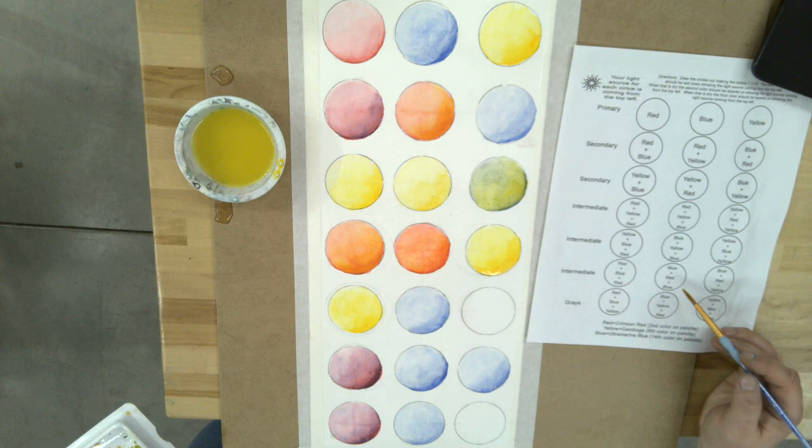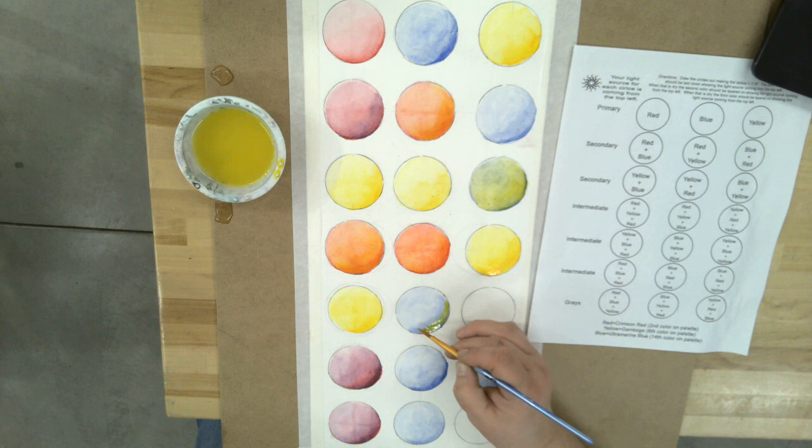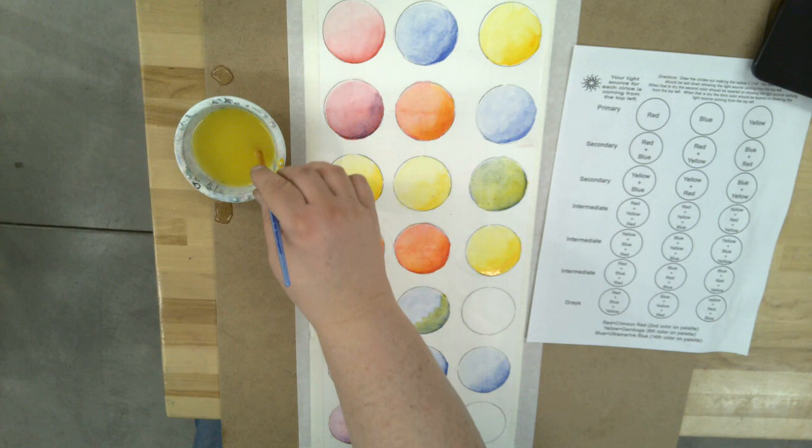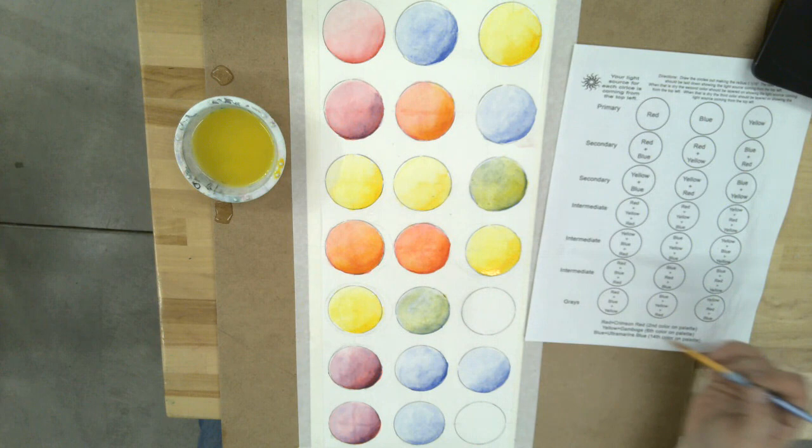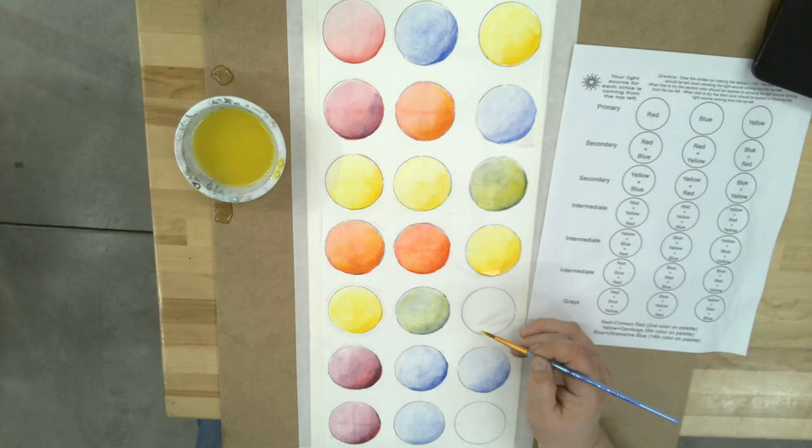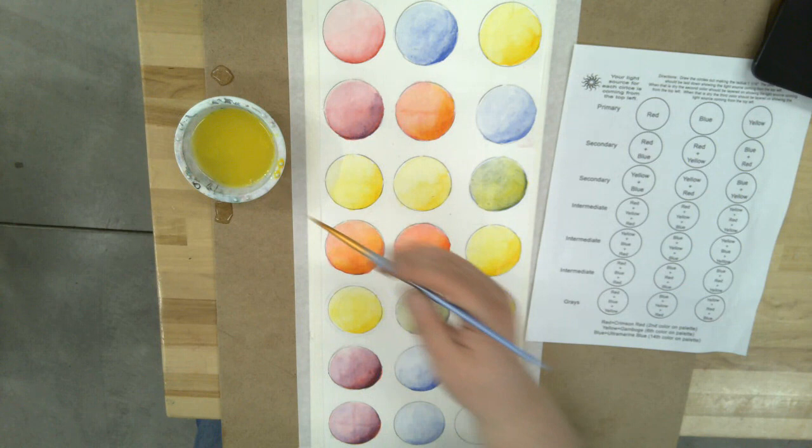This next one is blue plus yellow and then we're gonna add blue over the top, so we're gonna have a blue green eventually. Right now we're making the green part, but then we'll layer another glaze of blue over the top to make more of a blue green. Then yellow is our first color here, and then pull that up.